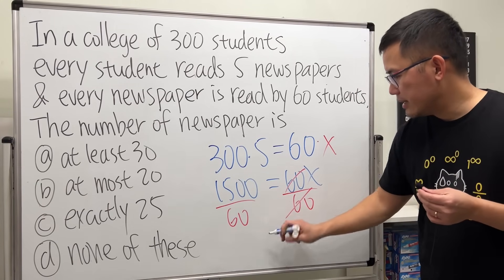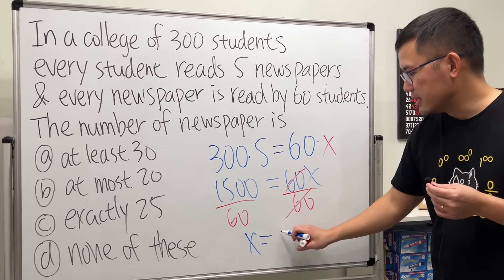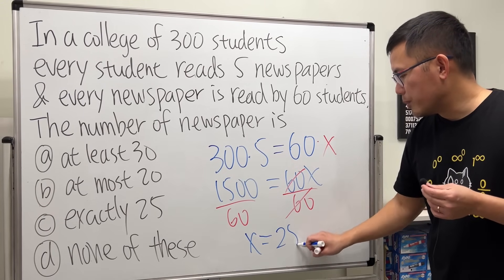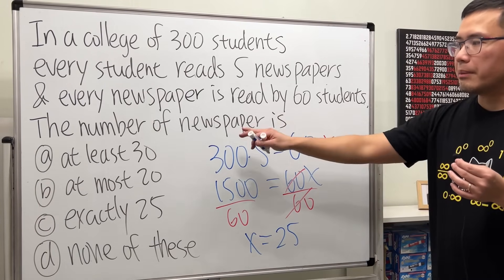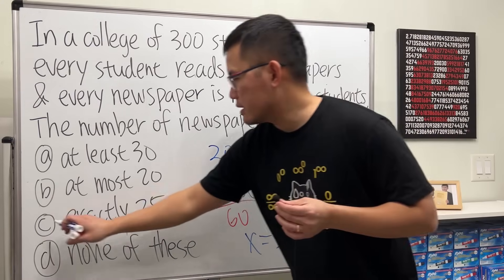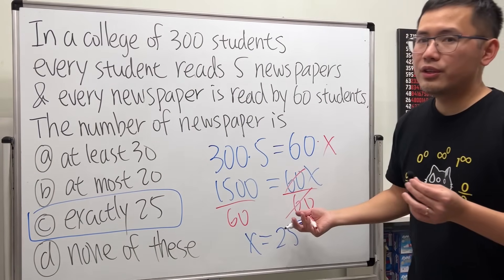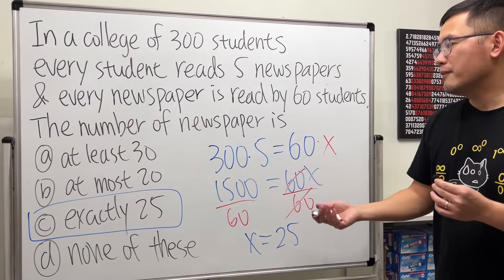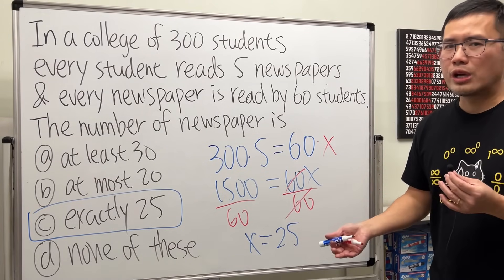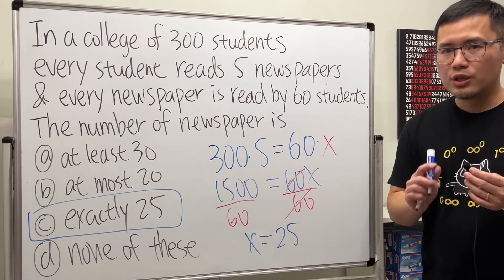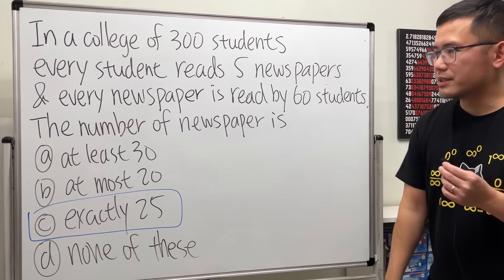They cancel and x will be 1500 divided by 60, which equals 25. So 25 is the number of newspapers — that's it, this is answer choice C. But of course this might be a little too abstract because we are using algebra, so let me also explain it another way.